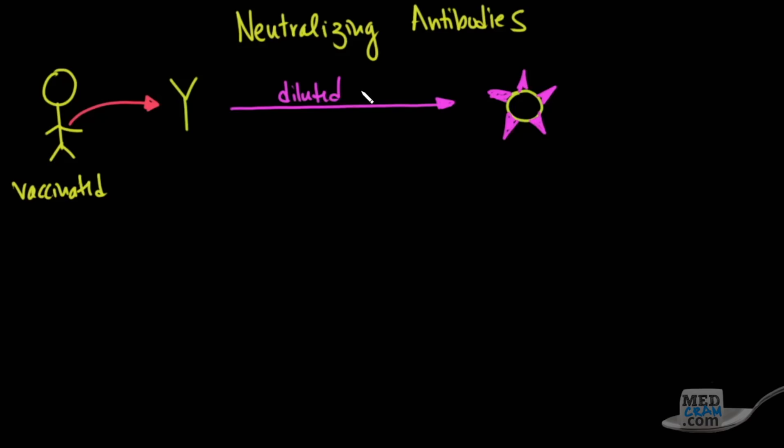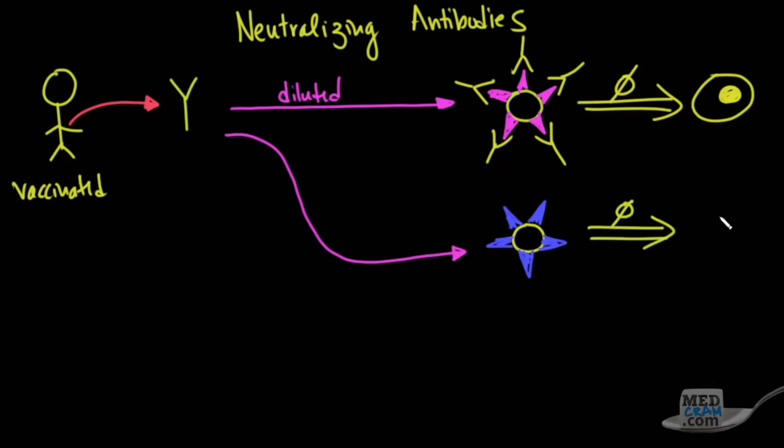The amount of antibodies produced in someone who's vaccinated is several times the amount necessary to neutralize the regular virus. So they diluted down the antibodies until it neutralized, just neutralizing the virus so it would not be able to infect cells. Then they designed a California variant and did the same experiment until they found the virus was not able to infect cells.